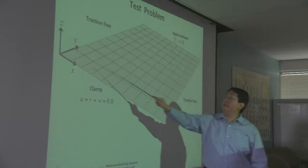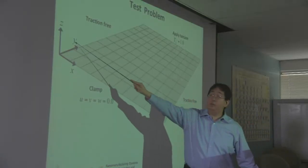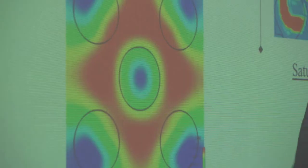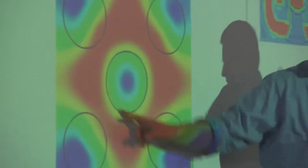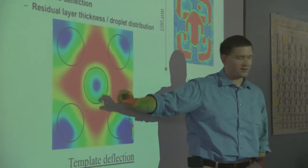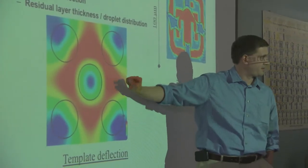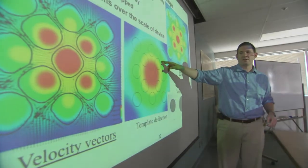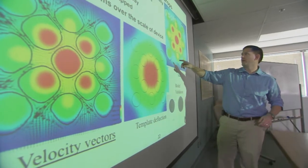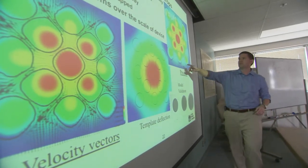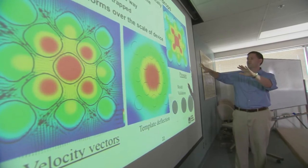GOMA 6.0 has impacted manufacturing process design and is deployed extensively in the manufacturing industrial sector. Its use has saved Sandia's industrial partners significant costs by decreasing the scope of experiments and has facilitated process improvements unavailable by any other means.